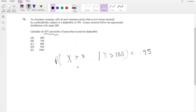So what they're saying is, find a little x such that given it exceeds the deductible, it is equal to the 95th percentile.